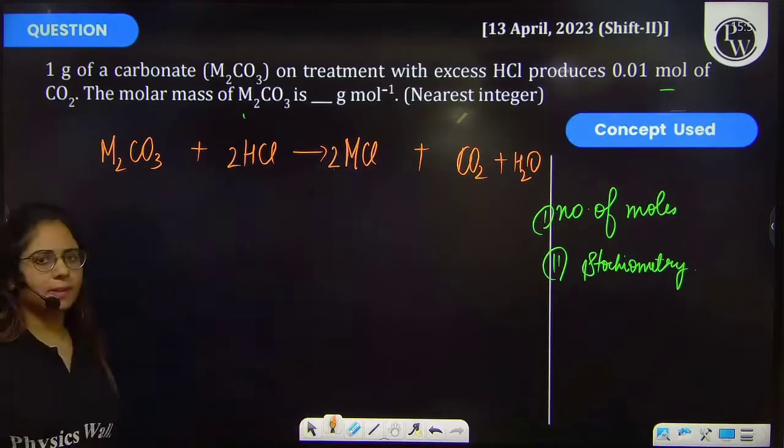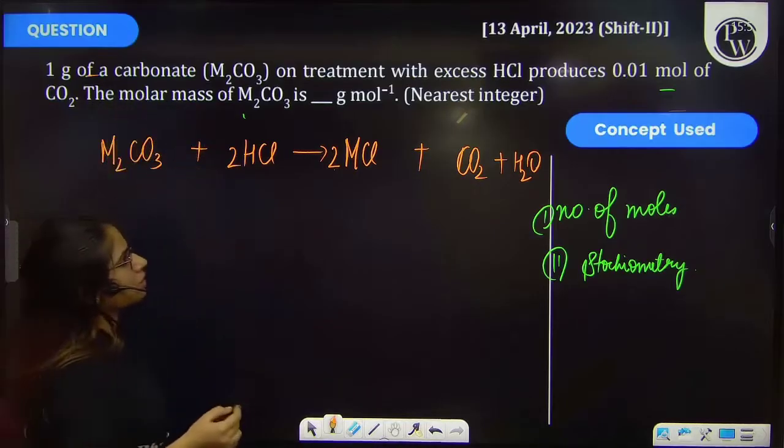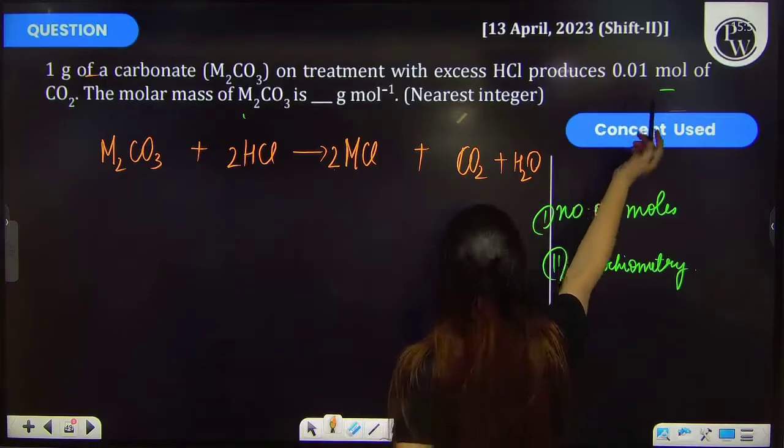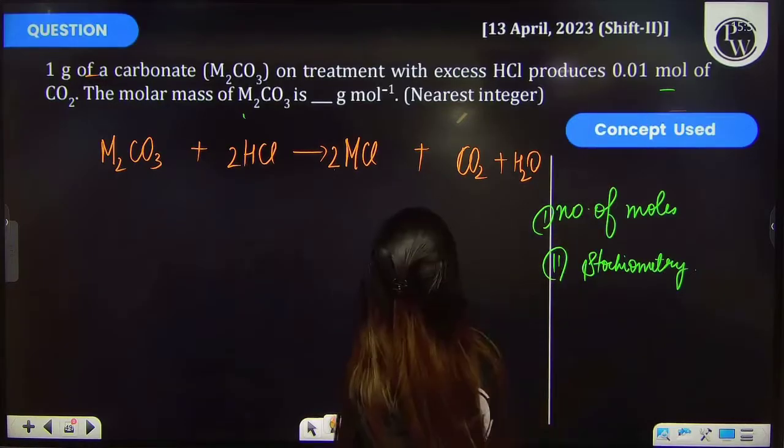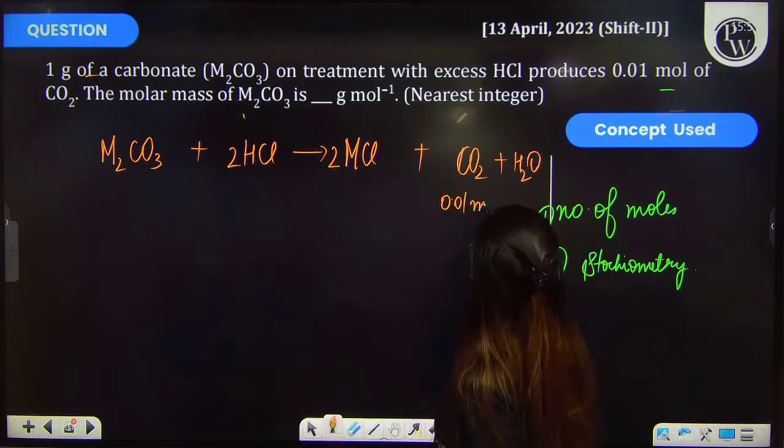Now you have been provided with 1 gram of carbonate. Also it produces 0.01 mol of CO₂. 0.01 mol of CO₂ is produced.